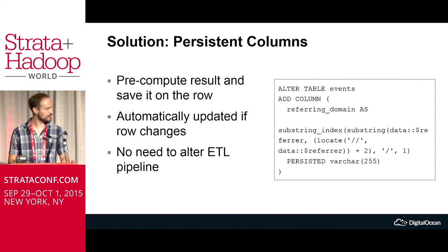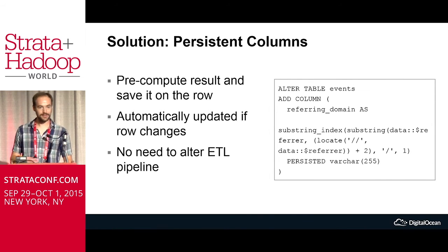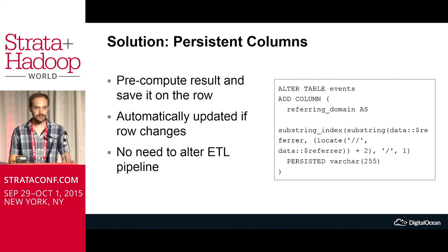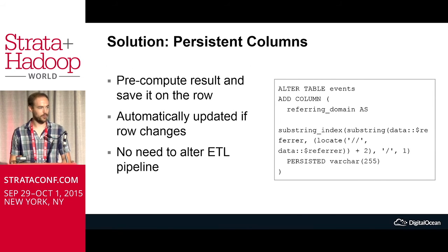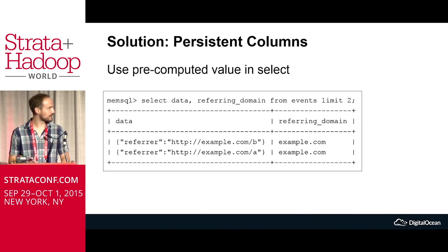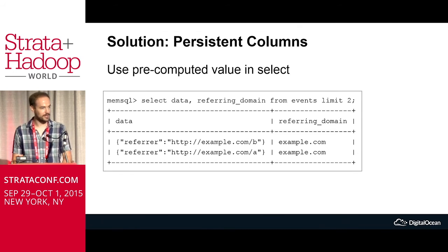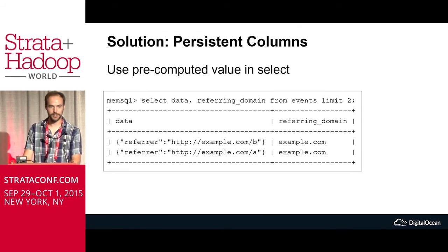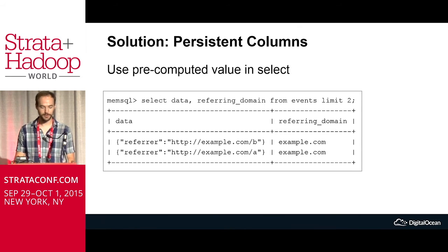As ugly as that query is — substring index, substring refer, locate — we're computing this as we're inserting or updating the data. And if the JSON document underneath changes, that column updates. So now it's built into the row, right there available for us to query on, and the marketing team can easily sum up numbers based on the referring domain.